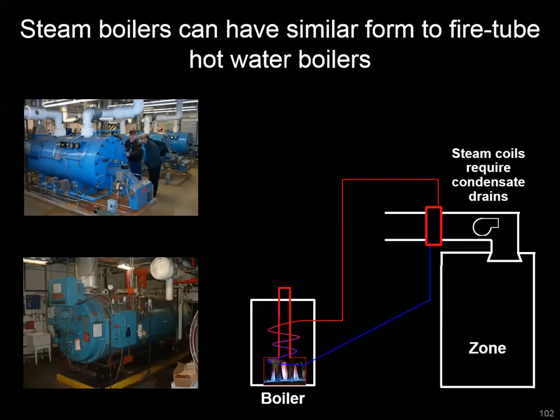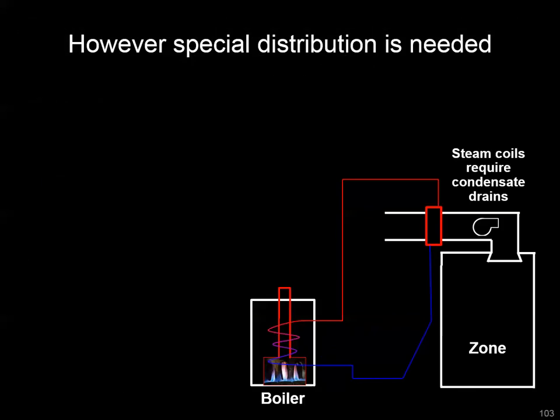The steam boiler itself can look very similar to a hot water boiler. Looking at the picture, there are a couple of clues: at the top, you can see an equal line size going in and out of the boiler — that's your hot water supply and return. On the bottom, you don't see that equal line size; instead, off to the top right, you see a steam supply manifold. Beyond that visual clue, there's special infrastructure with steam that you want to take note of, including steam traps.